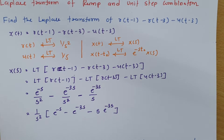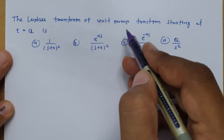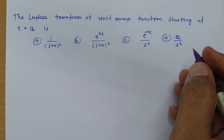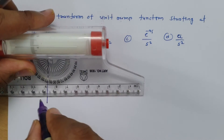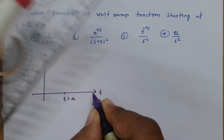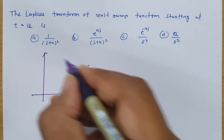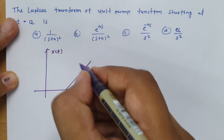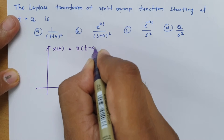I hope you understood that. We have one more problem. The question is: what is the Laplace transform of a unit ramp function starting at t = a? I am plotting the unit ramp function here, which starts at t = a. If we want to write a formula for this, since it starts at a, we can express it as r(t - a).